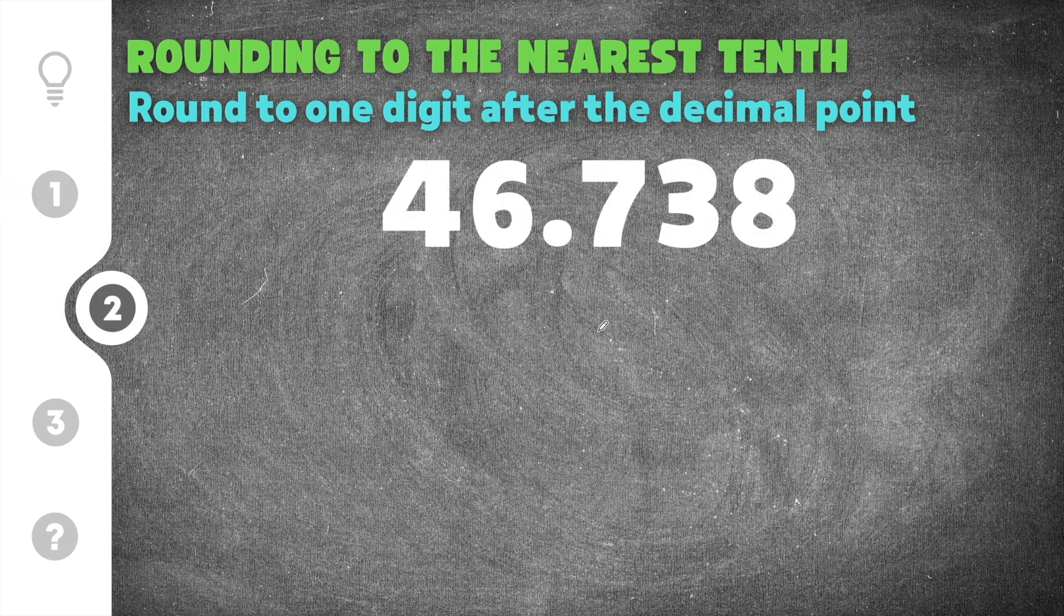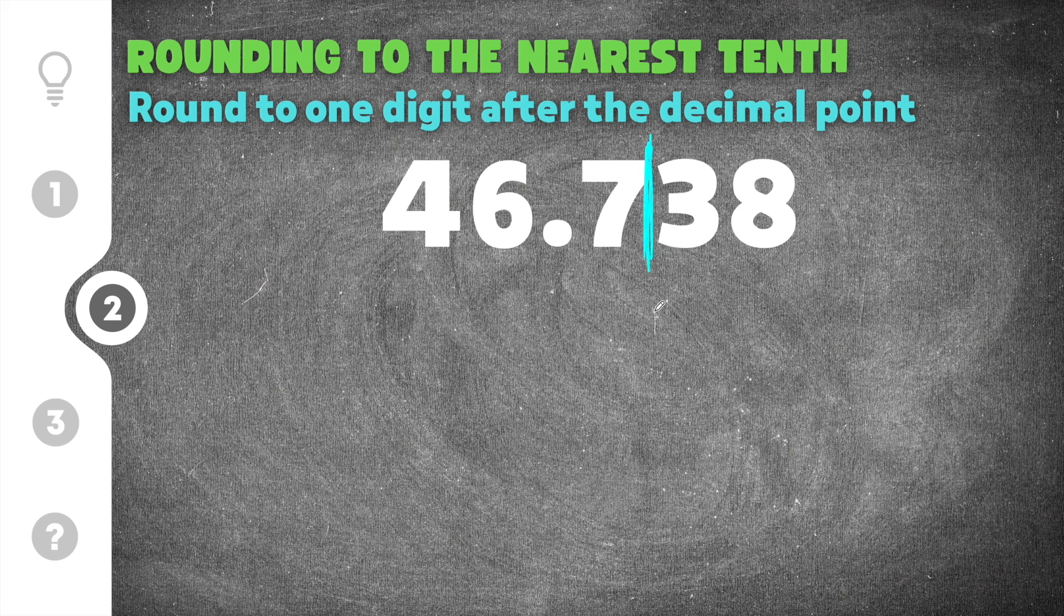Moving on to the second practice problem. This problem gives us 46.738. Now remember we're rounding to the nearest tenth, so the tenth is this first number after the decimal point. So I'm going to go ahead and draw my line just to remind myself what we're rounding to.